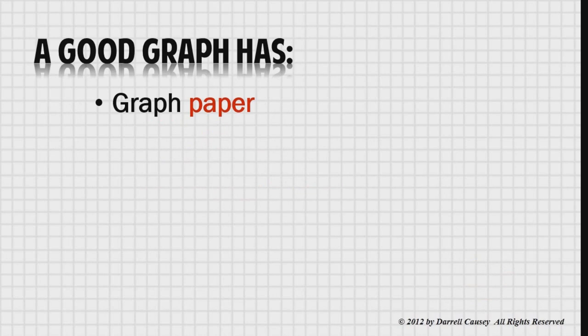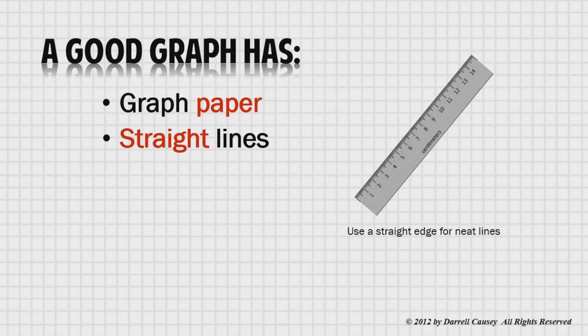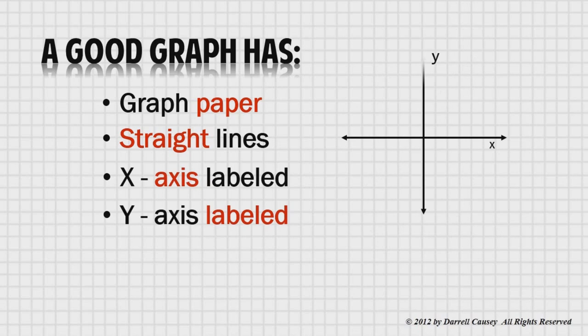Let's start with what makes a good graph. Every good graph should be done on graph paper. Graph paper will help you to keep things neat and clean. Good graphs have straight lines, so use a ruler or some type of straight edge. Freehand lines just aren't good enough. A properly done graph has the x-axis and the y-axis clearly labeled and a scale that is obvious. Now follow these guidelines to create good graphs.